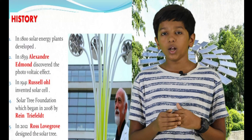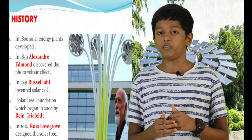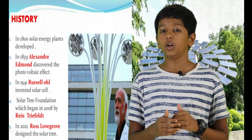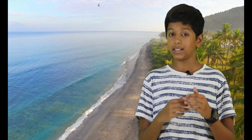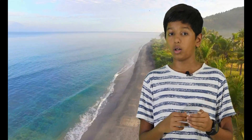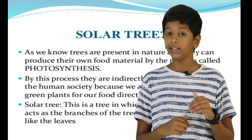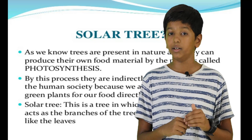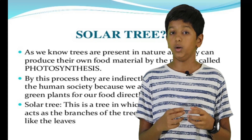The solar tree was invented by Ross Lovegrove in 2012. Our main question is: why is it called a solar tree? As we know, trees utilize sunlight and minerals like water to make their own food through a process called photosynthesis. Similarly, this solar tree utilizes sun energy and produces energy which is used by people in society.